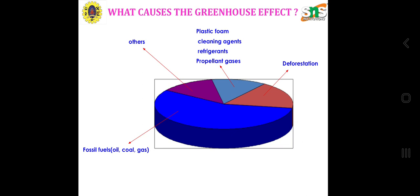What causes greenhouse gases? Plastic film, cleaning agents, refrigerants, propellant gases, and deforestation are important sources. The main source is production of electricity from fossil fuels: oil, coal, gas and other sources.